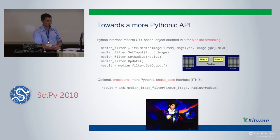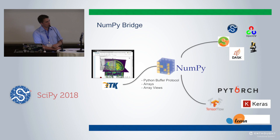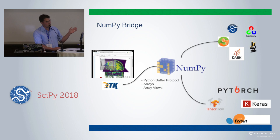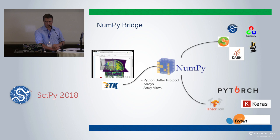Another neat thing is the NumPy bridge. Working together with the rest of the Python community means working with NumPy, and so using the Python buffer protocol in a nice way, making images and arrays available in the toolkit and available in NumPy. That means you can go back and forth with all the other wonderful toolkits and projects out there — either for image analysis or for analyzing the data you get out afterwards: scikit-image, OpenCV, or all the wonderful machine learning libraries.